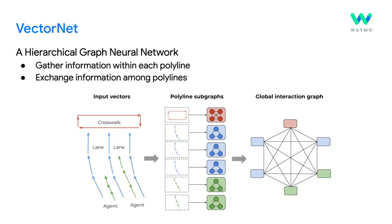VectorNet contains a polyline subgraph to gather information about each polyline, and a global interaction graph to allow information exchange among polylines. Experiments show that VectorNet is lighter, faster, and better than the traditional CNN.